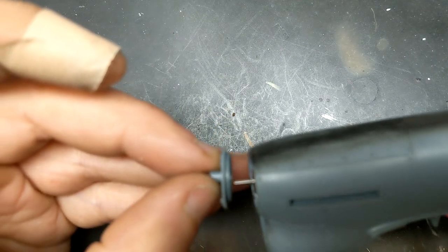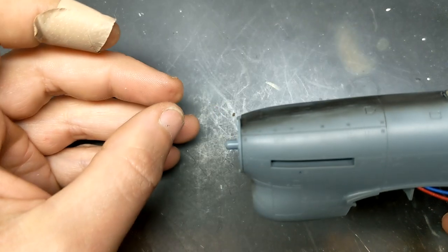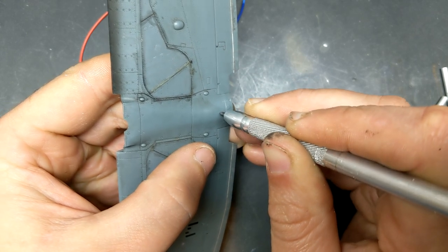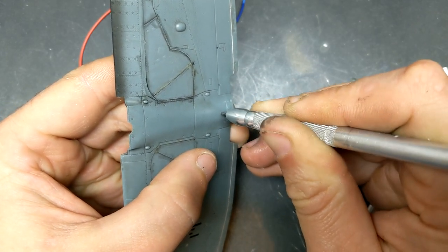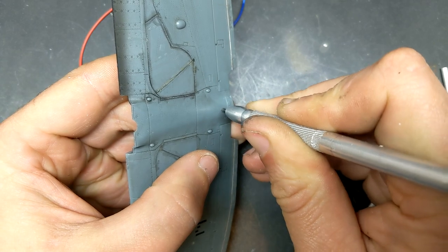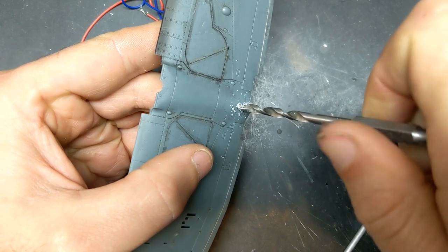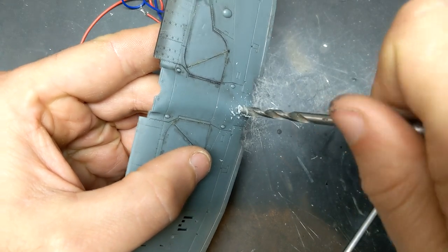Once everything had been test fitted a few times and there was no interference, it was time to put it in place with some super glue. Because my original plan of removing the wings to replace the battery and to turn the motor on wasn't going to work, I decided to use a hollow aluminum tube to run the wiring down through and run it to an external switch.